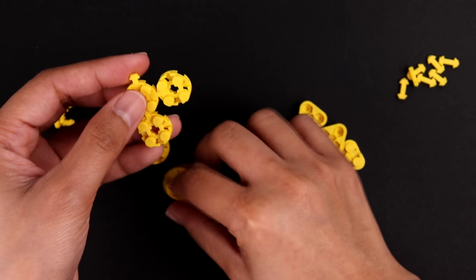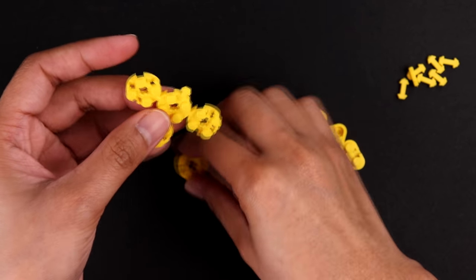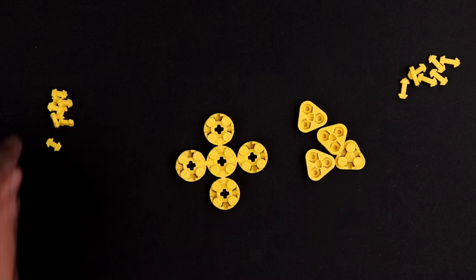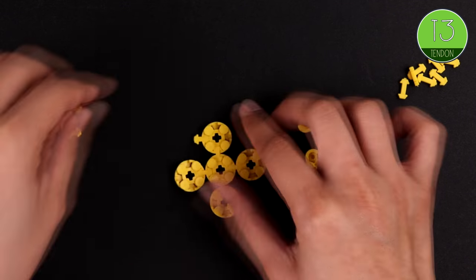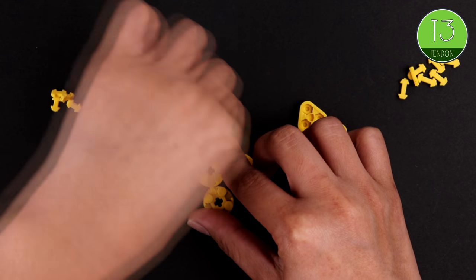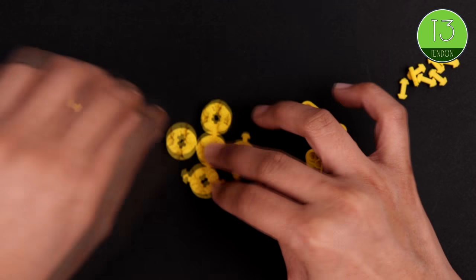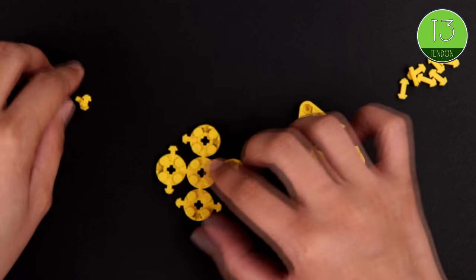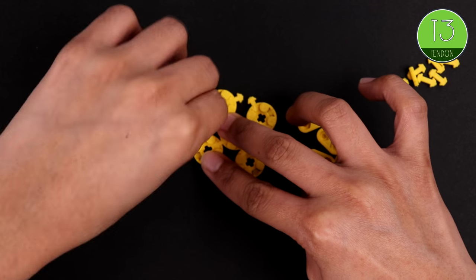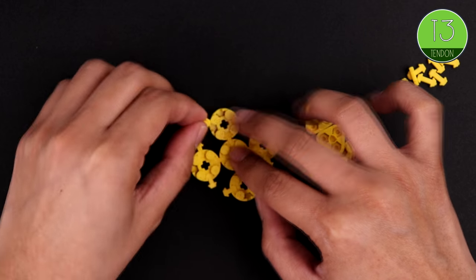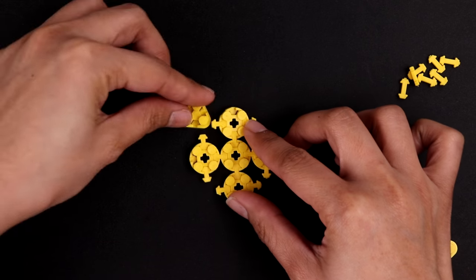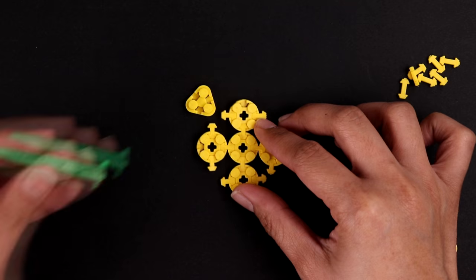We're going to start by building the belly of the Toad. To do this we're going to connect circles and triangles together using our T3 tendon. You can use the tool to poke the tendons in if you find that easier.